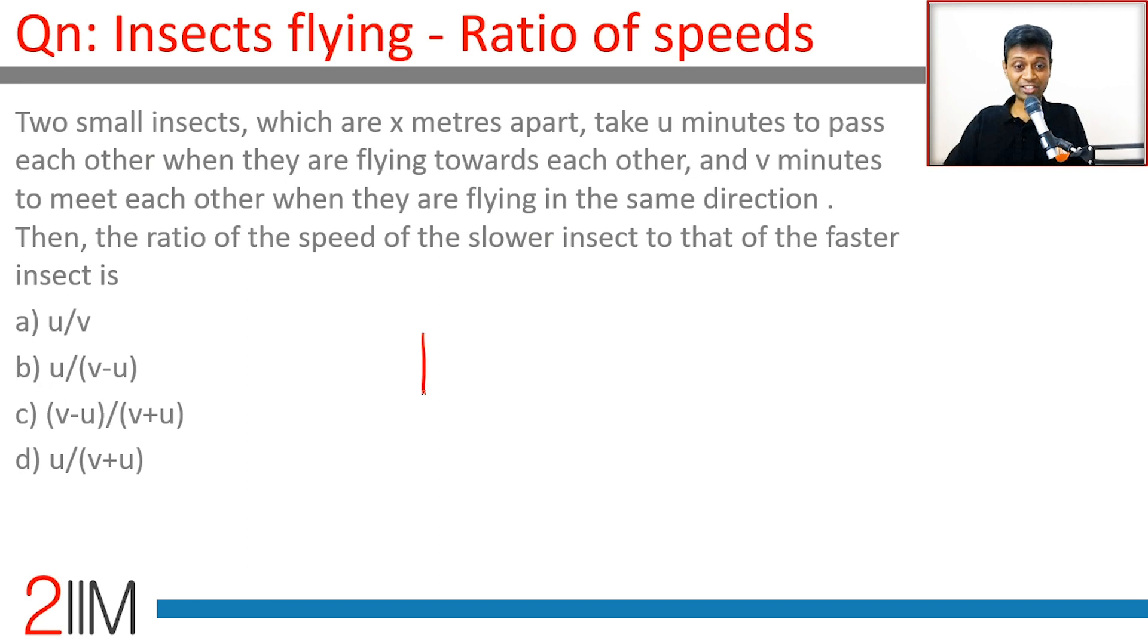Two small insects which are x meters apart take u minutes to pass each other when they are flying towards each other. Let's say this one travels at p, this one travels at q. They are traveling towards each other, relative speed is p plus q. x by p plus q, distance by relative speed is u.